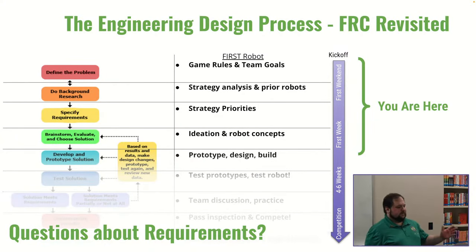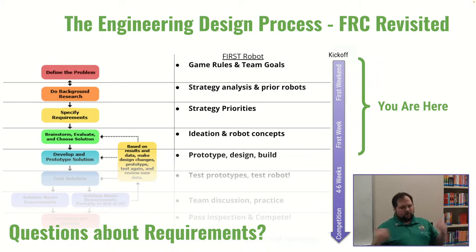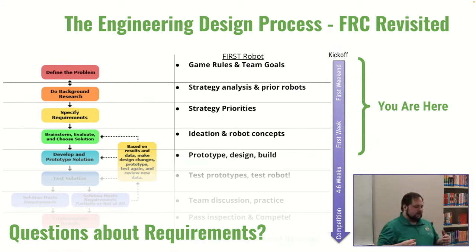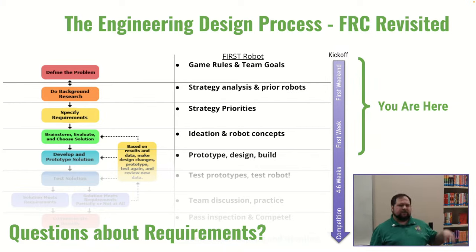Where are we in the process? We're somewhere between the first weekend and the first week — still developing requirements, starting to think about what the robot might actually look like. All of this focus — defining the problem, background research, specifying requirements — is just the first three to four days of the season, because it's so important to get this stuff figured out quickly before you get to designing. Whatever we come up with on the design side, we have to be able to evaluate whether it meets our requirements, so we need those requirements first.